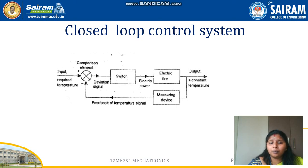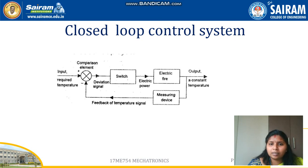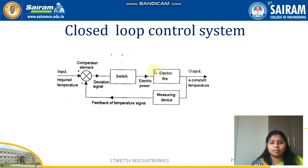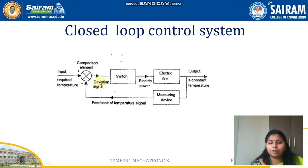Once the input is given and all the conversions are done, some process takes place. If the output obtained is not the same as the given input, the system compares them and repeats. The feedback signal gives information about the error, and the comparison element — which is also an error detector — compares what is wrong in the output. If the deviation is significant, it repeats the process until the output matches the input.